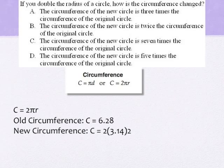Now let's see what happens when we double that radius. Instead of using 1 for radius, we'll use 2, which is twice of 1. 2 times 3.14 times 2 would be 12.56.